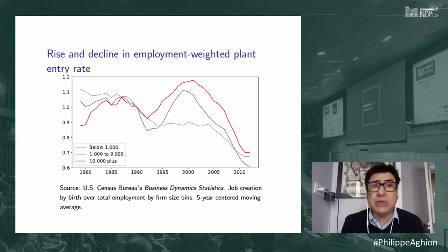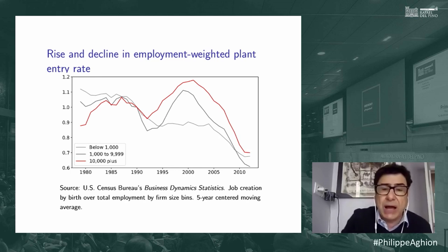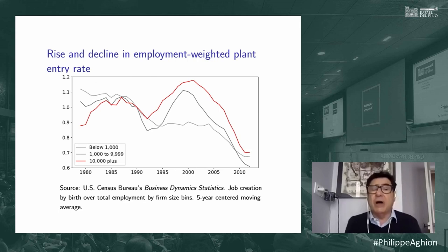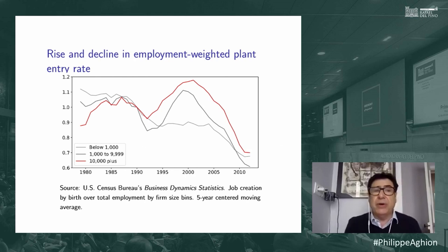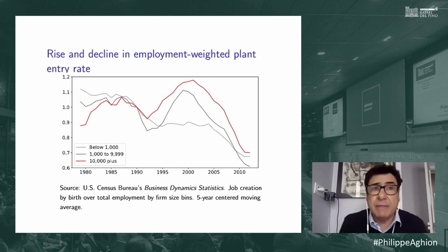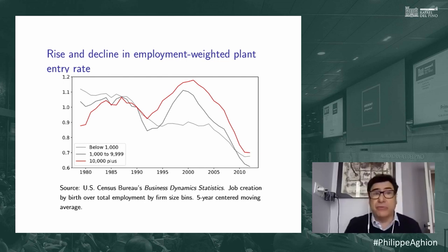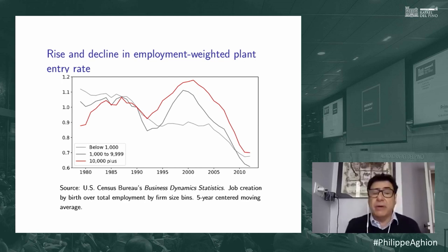Going back to Schumpeter's pessimism or Gordon's pessimism, they would say there's nothing you can do and you're bound to decline. But we say there is no fatality. If you adapt competition policy to the digital era — making sure that when you allow mergers and acquisitions you account for their effect on subsequent entry and innovation — you might be able to reverse this downward trend in growth. That's where the fighting optimism comes in.